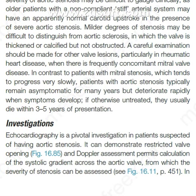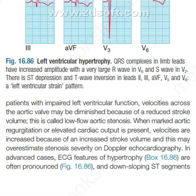Echocardiography is a pivotal investigation in patients suspected of having aortic stenosis. It can demonstrate restricted valve opening, and Doppler assessment permits calculation of the systolic gradient across the aortic valve, from which the severity of stenosis can be assessed. In patients with impaired left ventricular function, velocities across the aortic valve may be diminished because of a reduced stroke volume — this is called low-flow aortic stenosis. When marked aortic regurgitation or elevated cardiac output is present, velocities are increased and may overestimate stenosis severity on Doppler echocardiography.